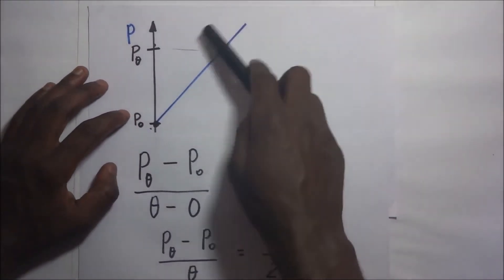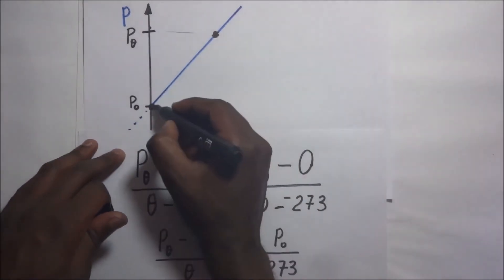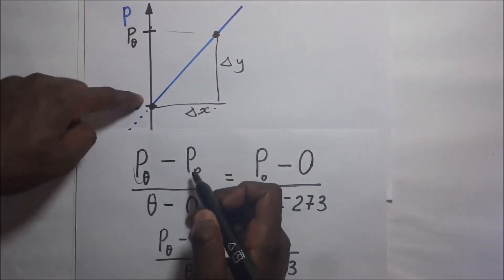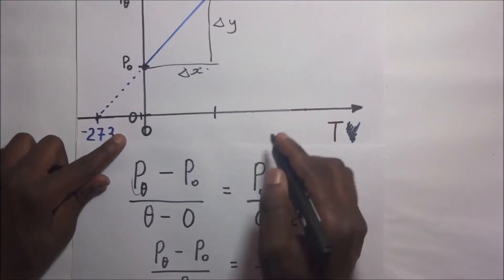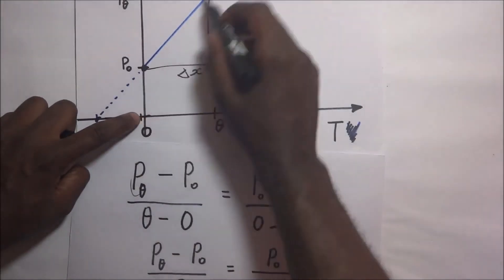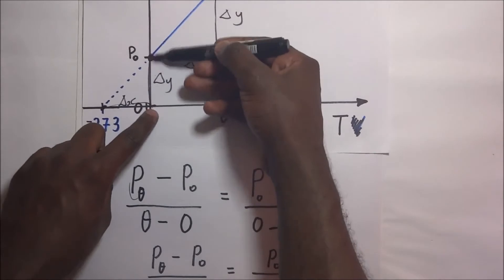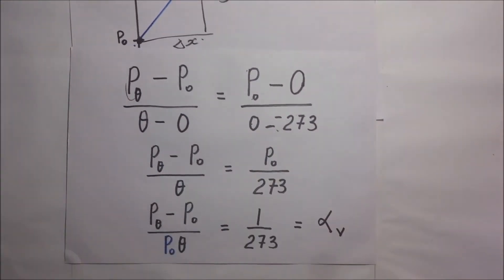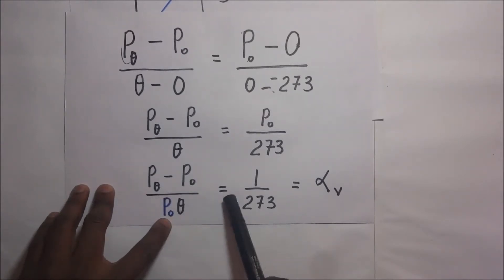The method for slope is change in y over change in x. Using the first pair of points, slope = (P-theta minus P-naught) divided by (theta minus 0). Using the second pair, slope = (P-naught minus 0) divided by (0 minus negative 273). Equating these gives the expression: (P-theta minus P-naught) over (P-naught times theta) equals 1 over 273.